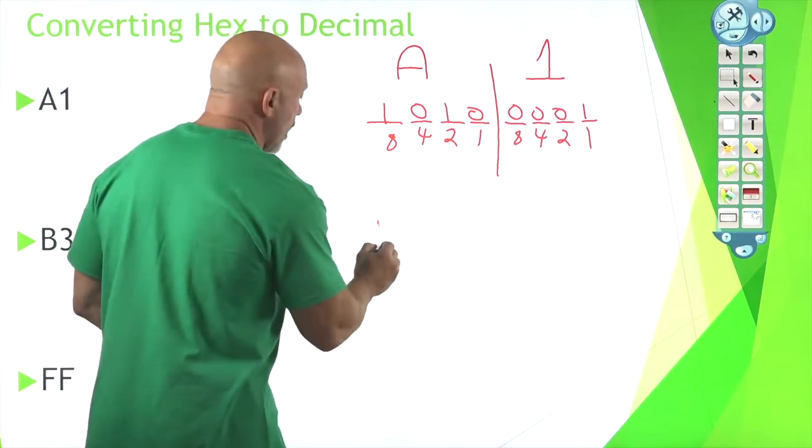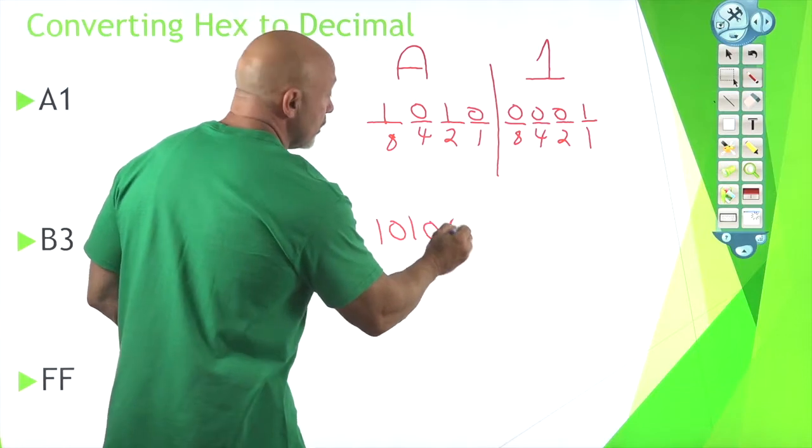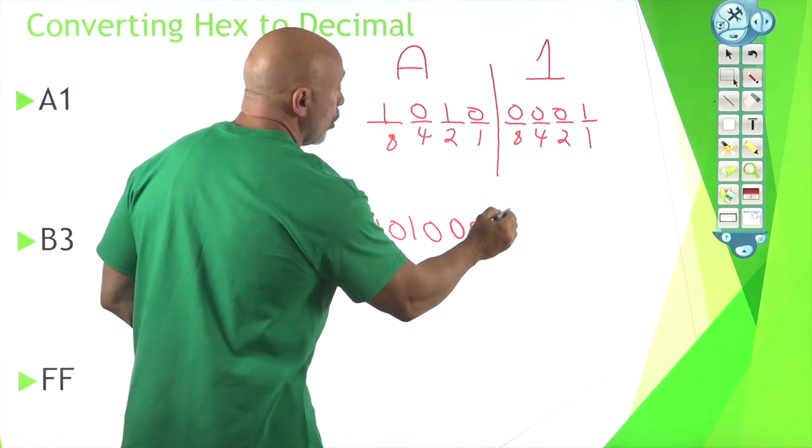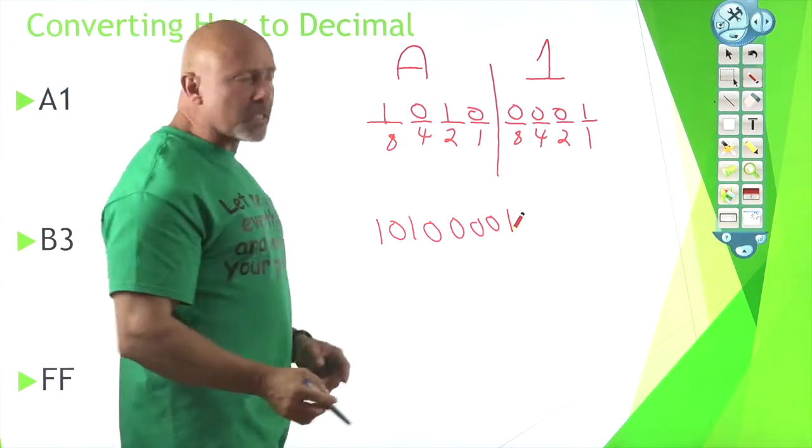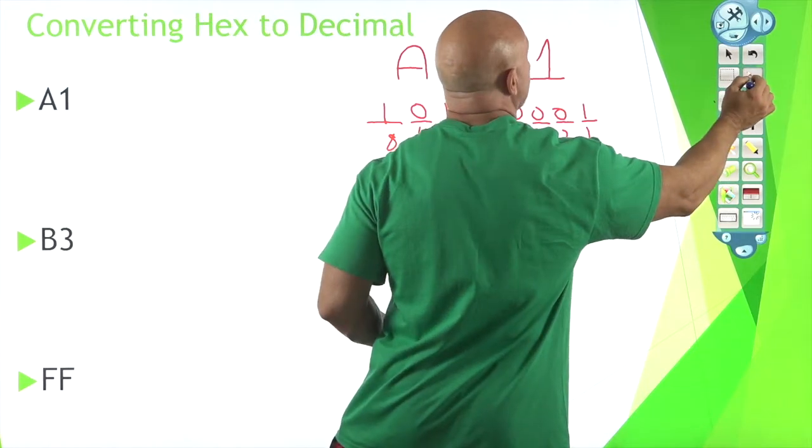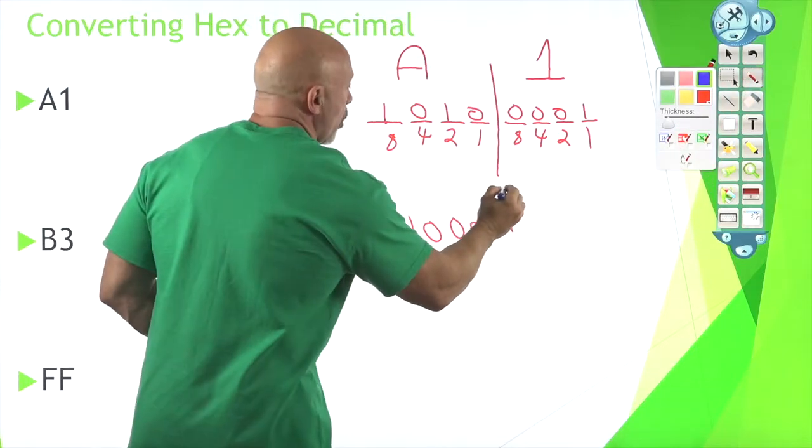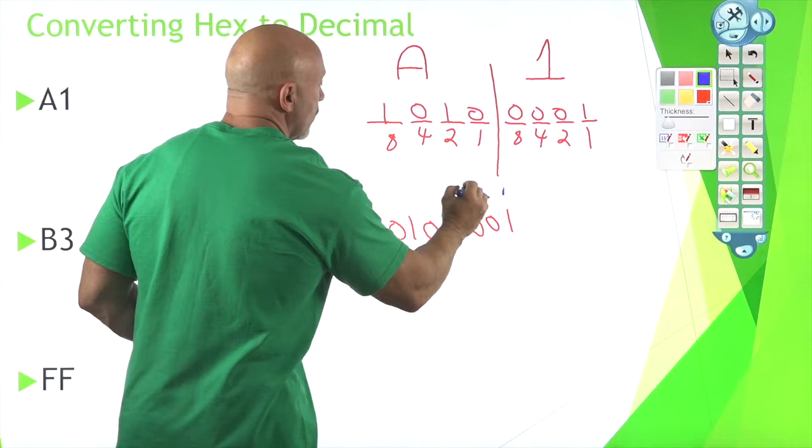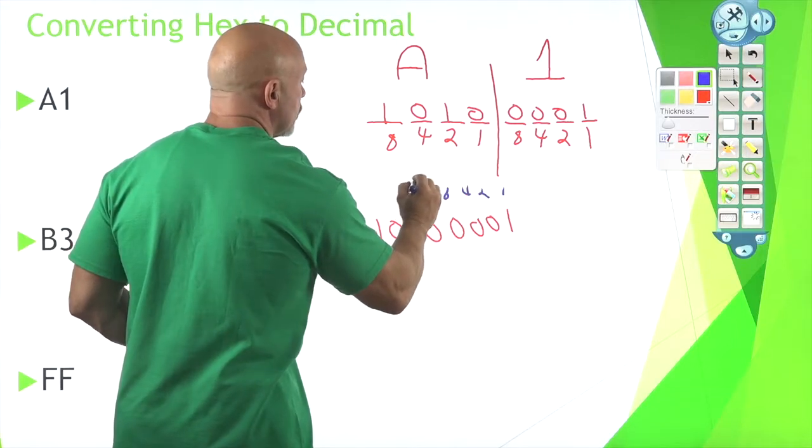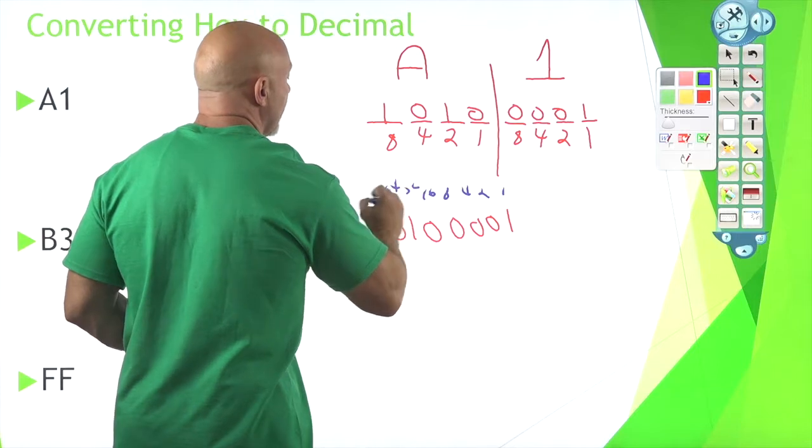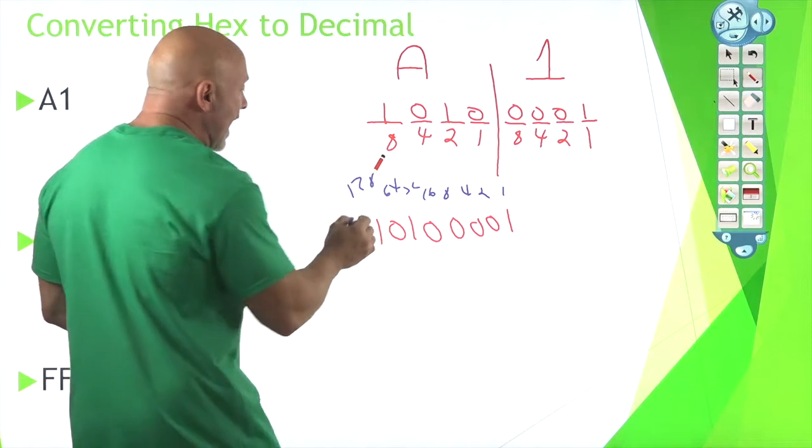How about that? One, zero, one, zero, zero, zero, zero, one. So that is your binary, but we're looking for the decimal. Well, let's put this in blue this time. All right, let's put this in blue and we got one, two, four, eight, sixteen, thirty-two, sixty-four and 128. And I'm sure you're very familiar with these numbers.